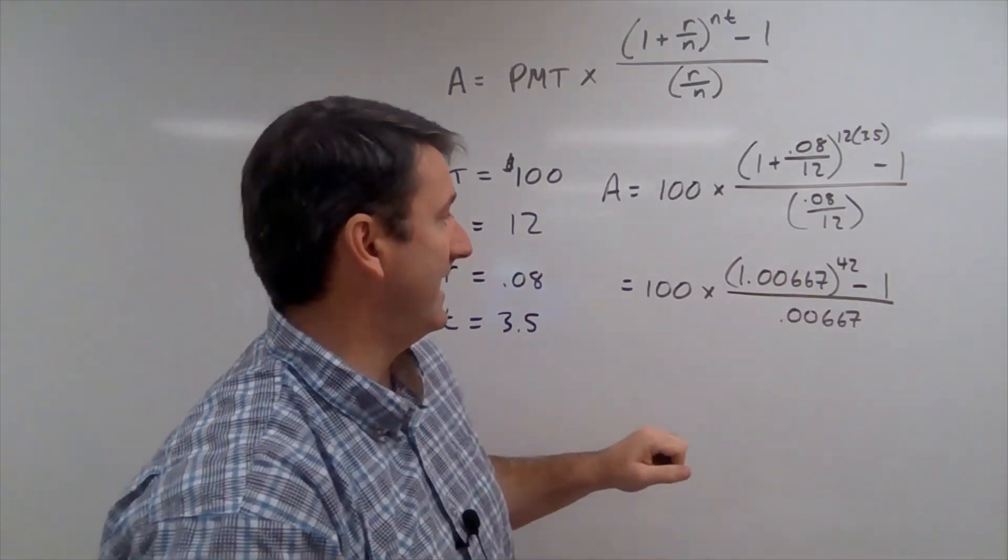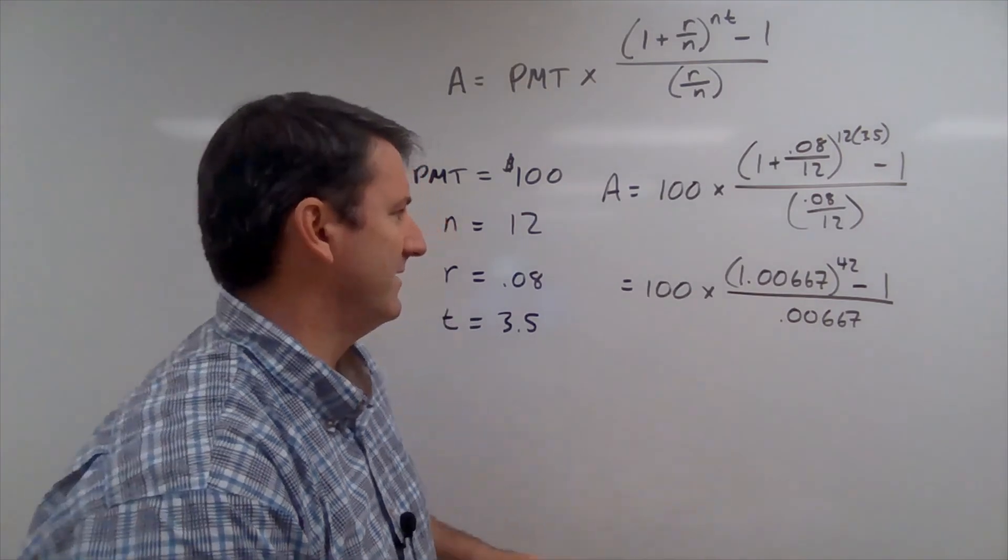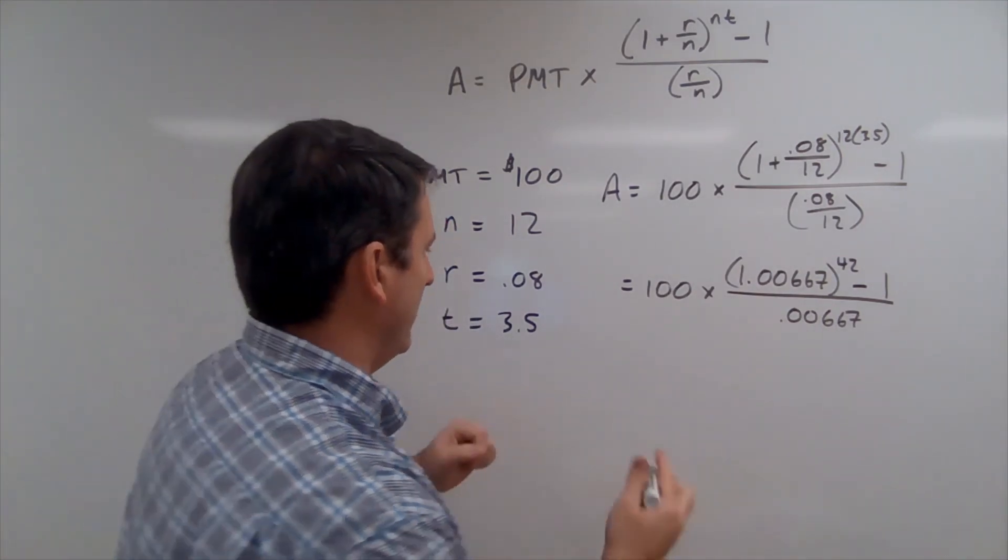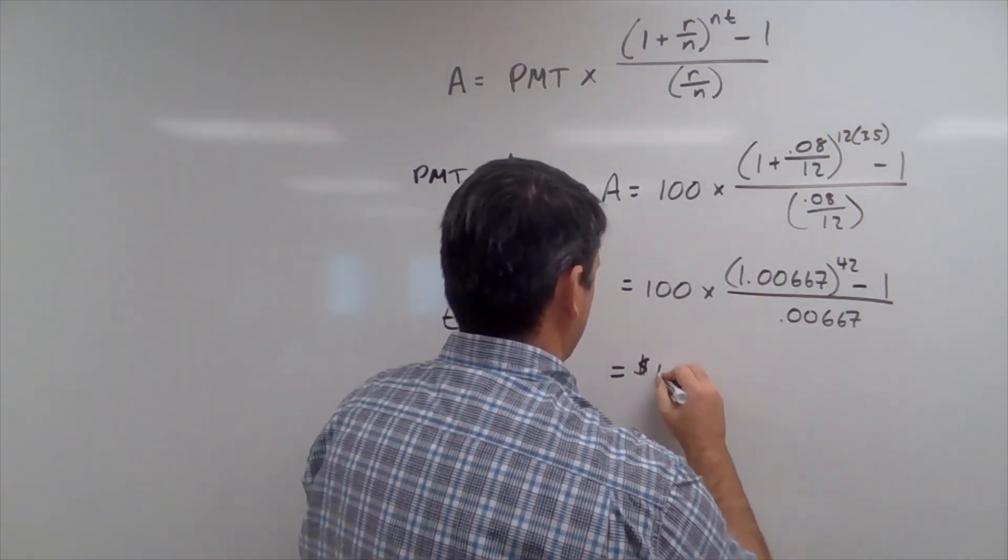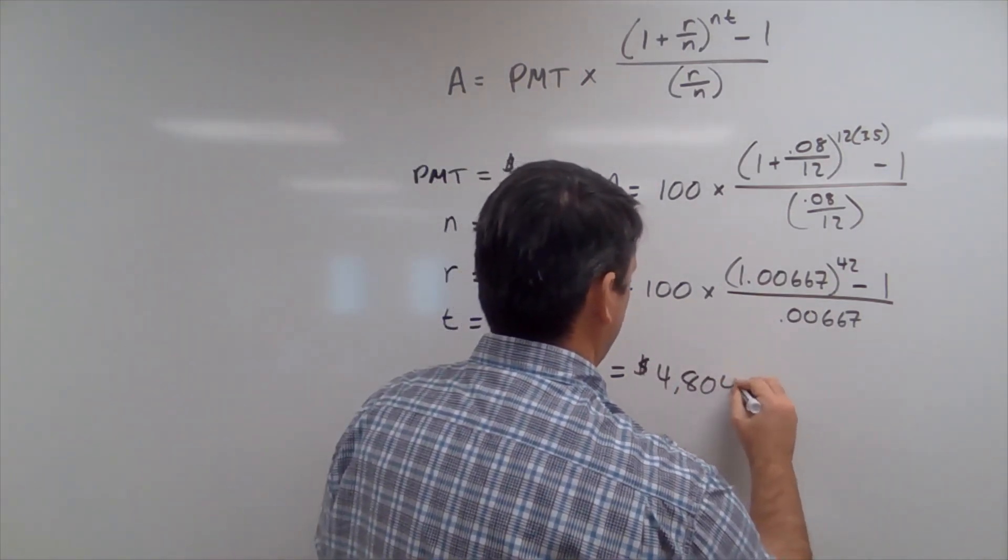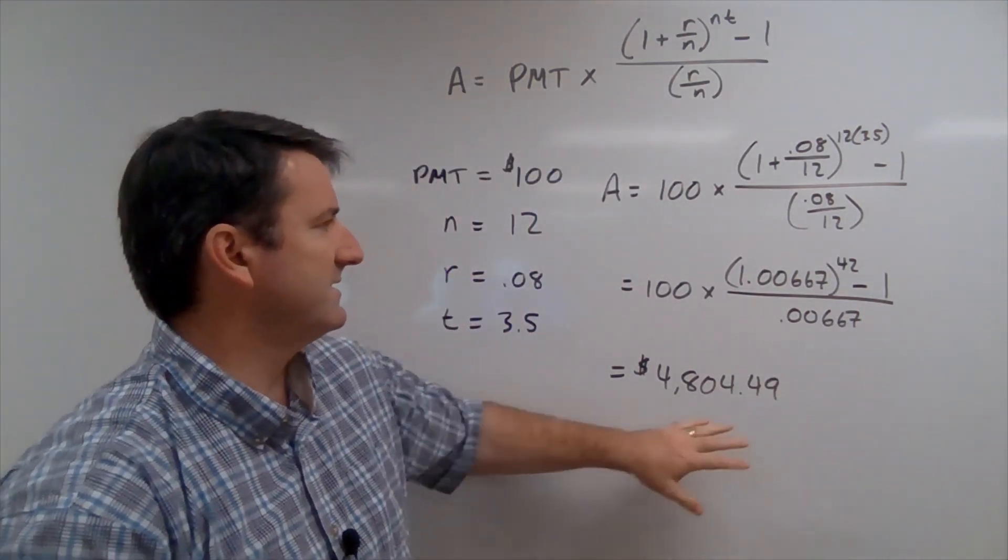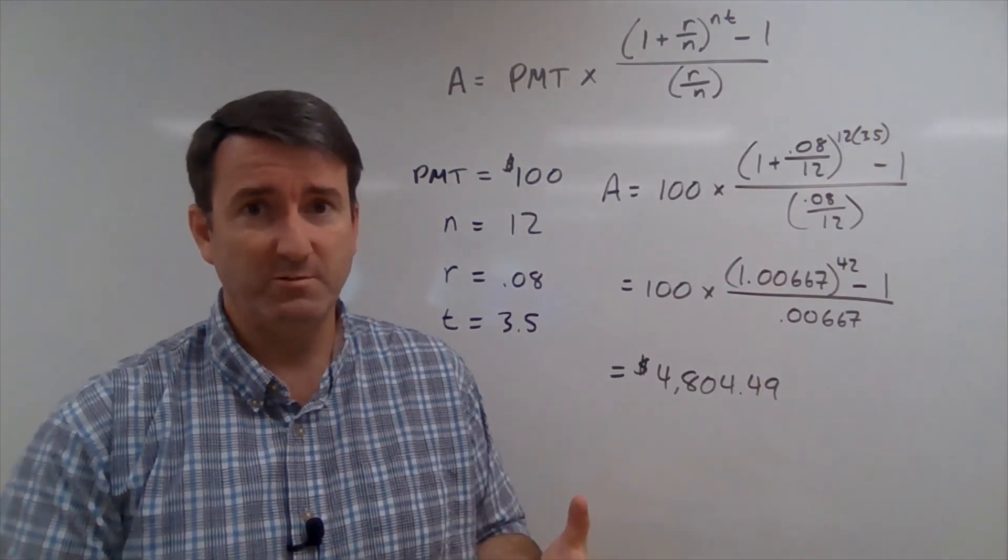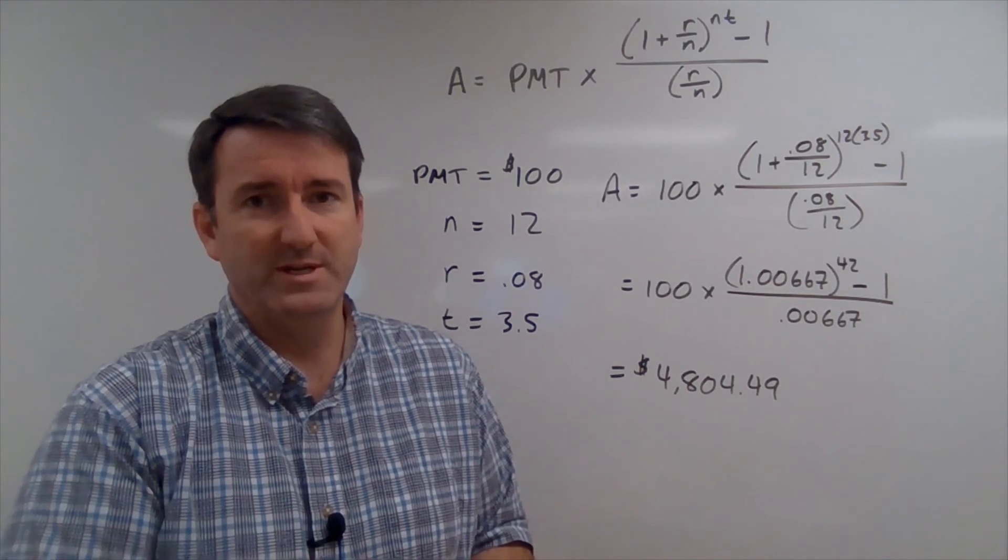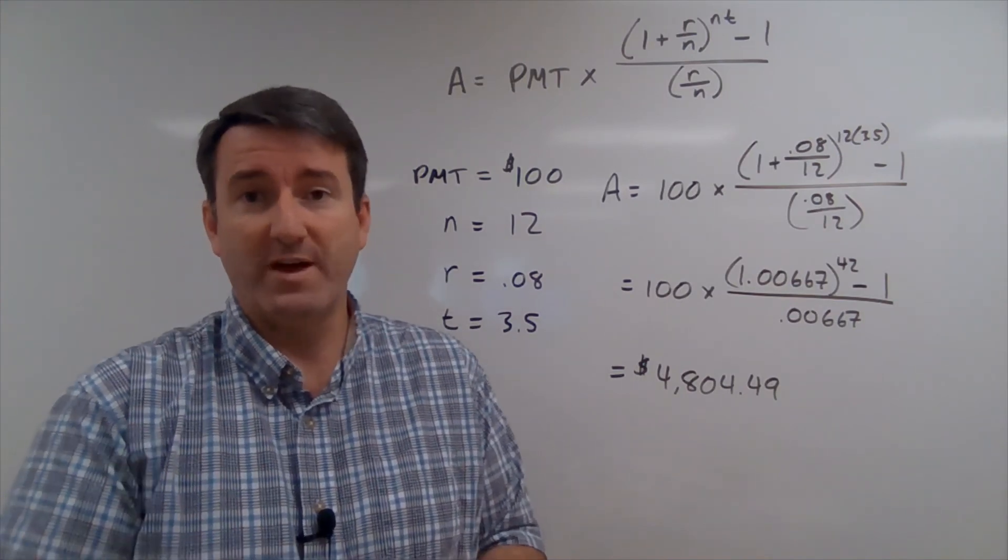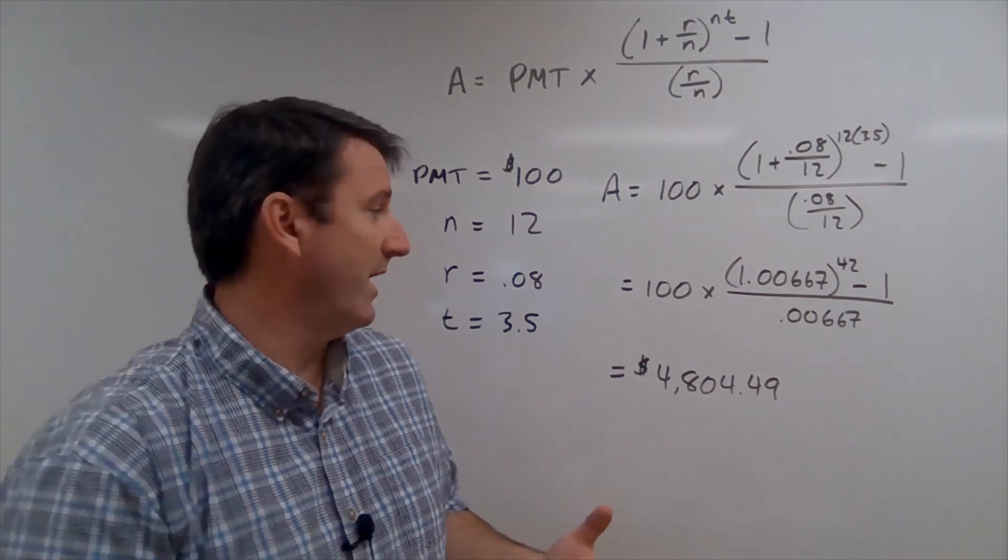Now if we plug this into our calculator we get $4,804.49. So notice that we've been making payments for 42 months and it was $100 a month. So the amount that we've put into this savings plan is $4,200. And we now have a balance of $4,804.49. So the interest that we've earned is about $604.49.